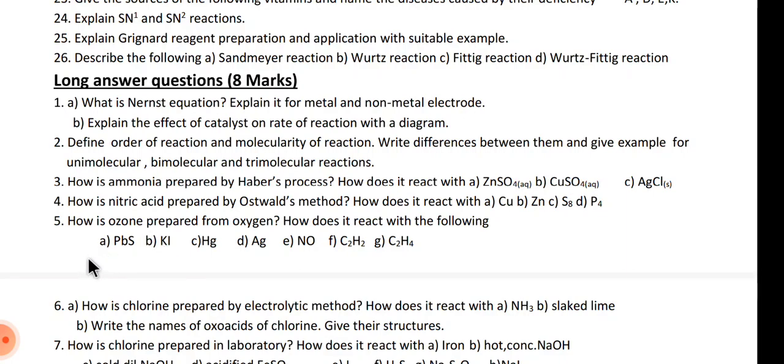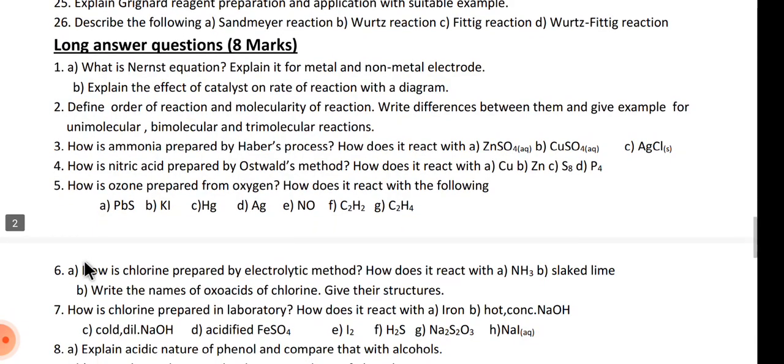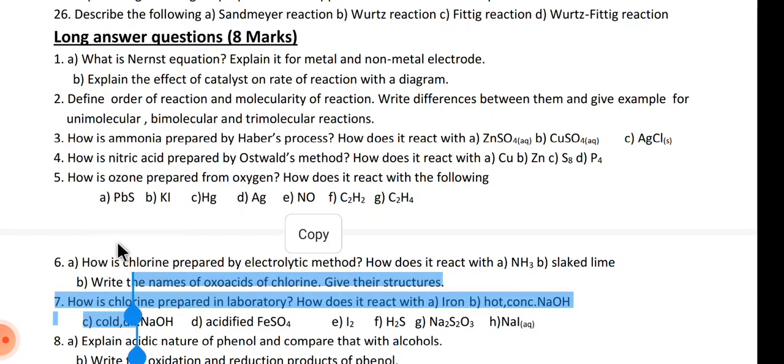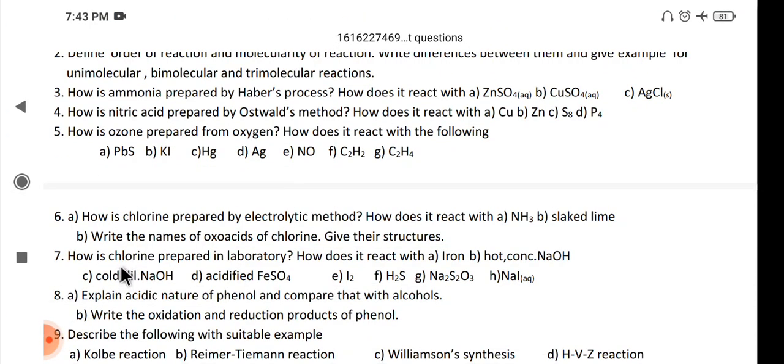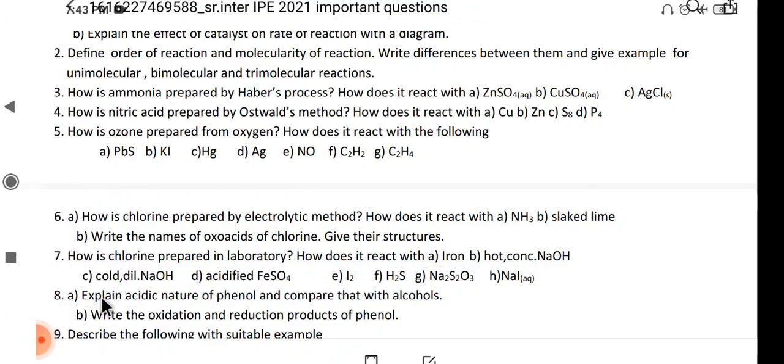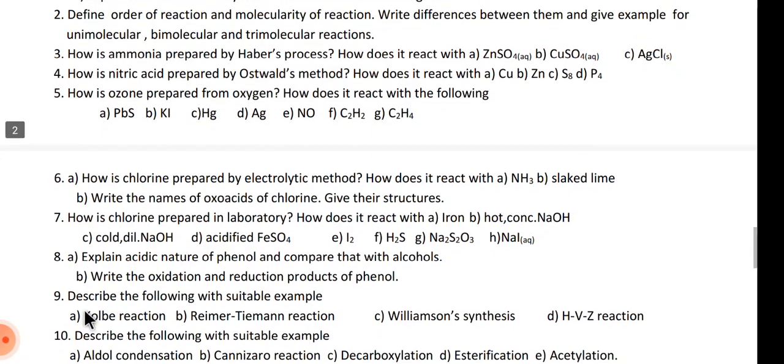Fifth one - ozone is prepared from oxygen and all the properties. It reacts with PbS, KI, Hg, AgNO3, acetylene, ethylene. 16th group elements - ozone. Next, sixth one - how is chlorine prepared by electrolytic method and properties also. Write the names of oxo acids of chlorine and properties. Seventh one - chlorine prepared by laboratory method - 17th group elements.